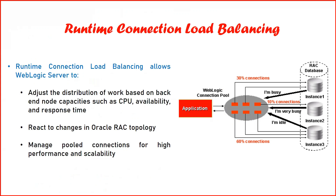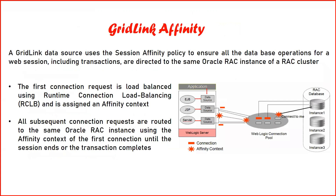The second property is runtime connection load balancing. This is an important feature of your active grid link data source. Suppose you have multiple database instances running in the backend and your applications are accessing the database via connection pools at runtime. At a certain moment, if some instances are busy and under heavy load, that information is automatically published to your connection pool — indicating this server is busy, so take a connection from another instance with less load. It performs runtime connection load balancing according to the load of your backend RAC clusters.